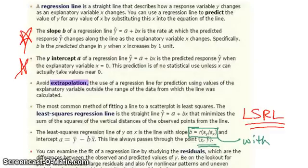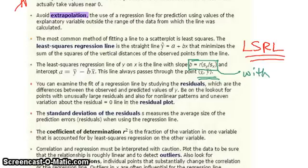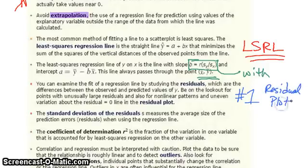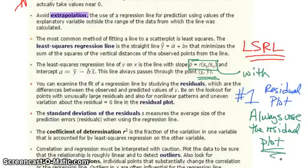When we examine how well the LSRL describes our data, the number one way to determine if it's good or not is our residual plot. Always use the residual plot. And use the correlation coefficient R or the coefficient of determination R² to back up what your residual plot says. If your residual plot is random, awesome. If your R value is 0.5, not awesome. We want both to be involved.